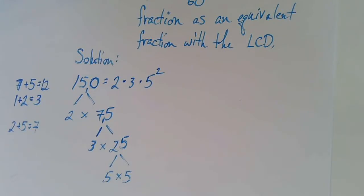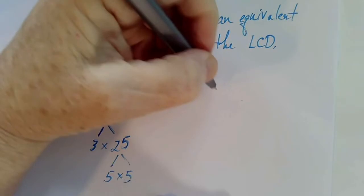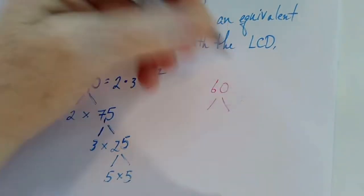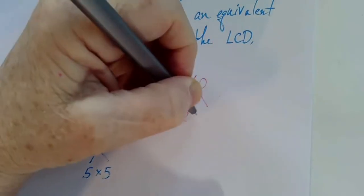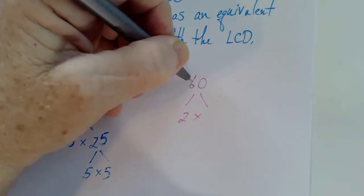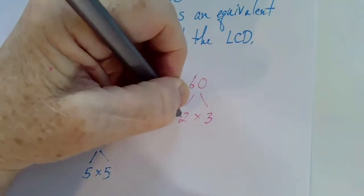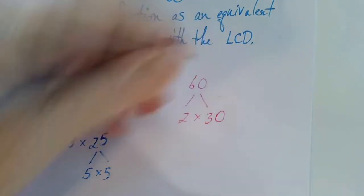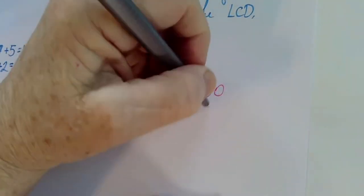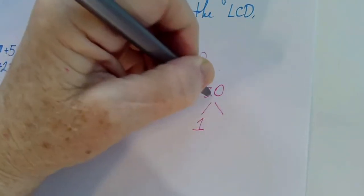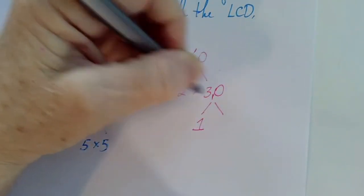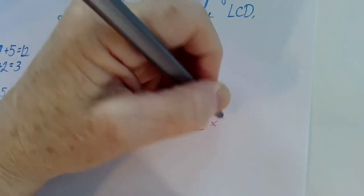Now let's find the prime factorization of 60. Two will go into it because zero is an even digit. Two goes into six three times. Two goes into zero zero times. So again, two will go into 30. Two goes into three one time with the remainder of one. Two goes into ten five times.